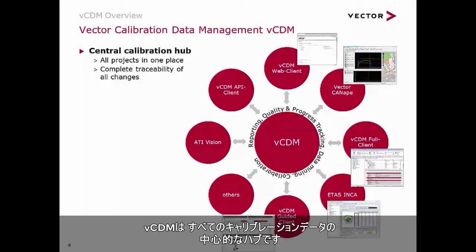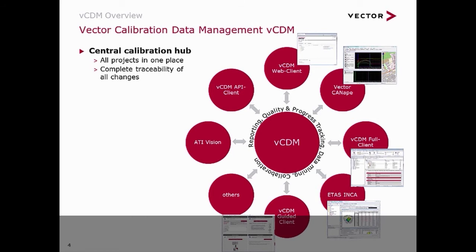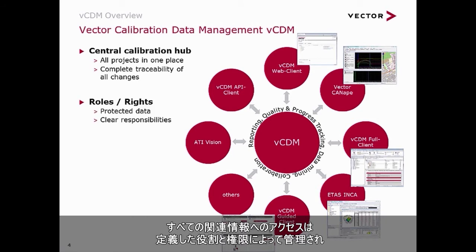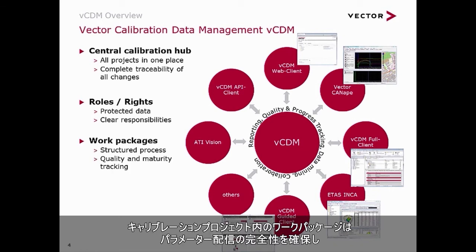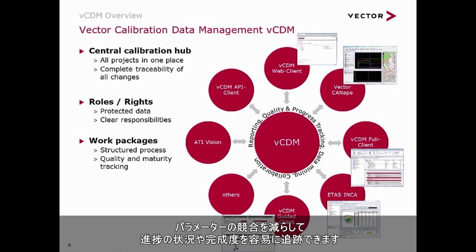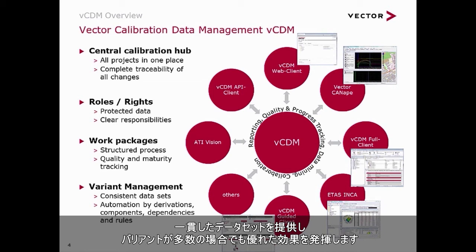VCDM is your central hub for all calibration data. A database manages all calibration projects and their documents — A2L, HEX files, parameters, and many more. Access to all relevant information is administered by defined roles and rights, guaranteeing that your calibration data is only accessible to the appropriate individuals. Work packages for individuals or teams within a calibration project help ensure completeness of parameter deliveries, reduce parameter conflicts, and support easy tracking of progress and maturity. VCDM's comprehensive tools for managing calibration variants deliver consistent datasets and provide great effectiveness even for large numbers of variants.